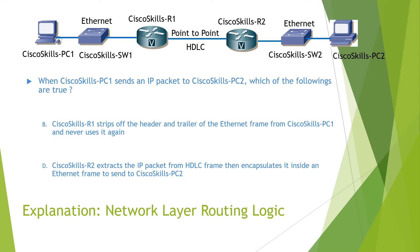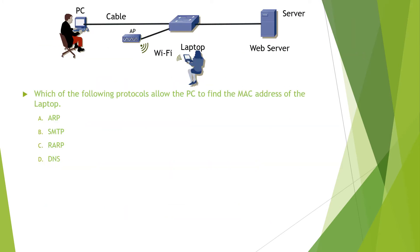Which of the following protocols allows the PC to find the MAC address of the laptop — ARP, SMTP, or DNS? We know that ARP is a layer 2 protocol used to find a MAC address associated with an IP address. So the final answer is A. You can find the detailed explanation in the video.